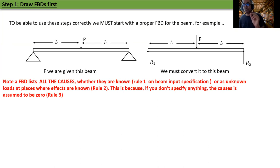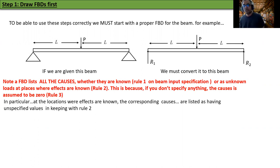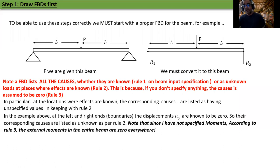A free body diagram lists all the external causes, whether they are known like the load P or unknown. At places where effects are known, if you don't specify anything, the cause is assumed to be zero. But if you know a cause is present but don't know its value, you must indicate it as unknown. In particular, at locations where effects are known, the corresponding causes are listed as having unspecified values, in keeping with Rule 2 from the previous lecture. At the left and right end boundaries, the displacements ui are known to be zero, so their corresponding causes are listed as unknown.